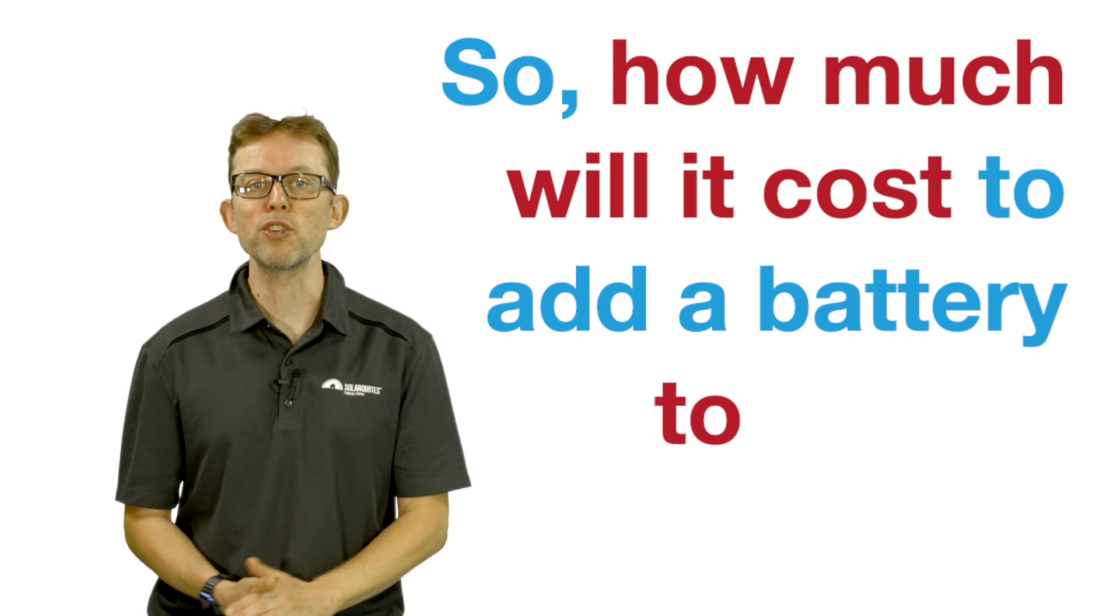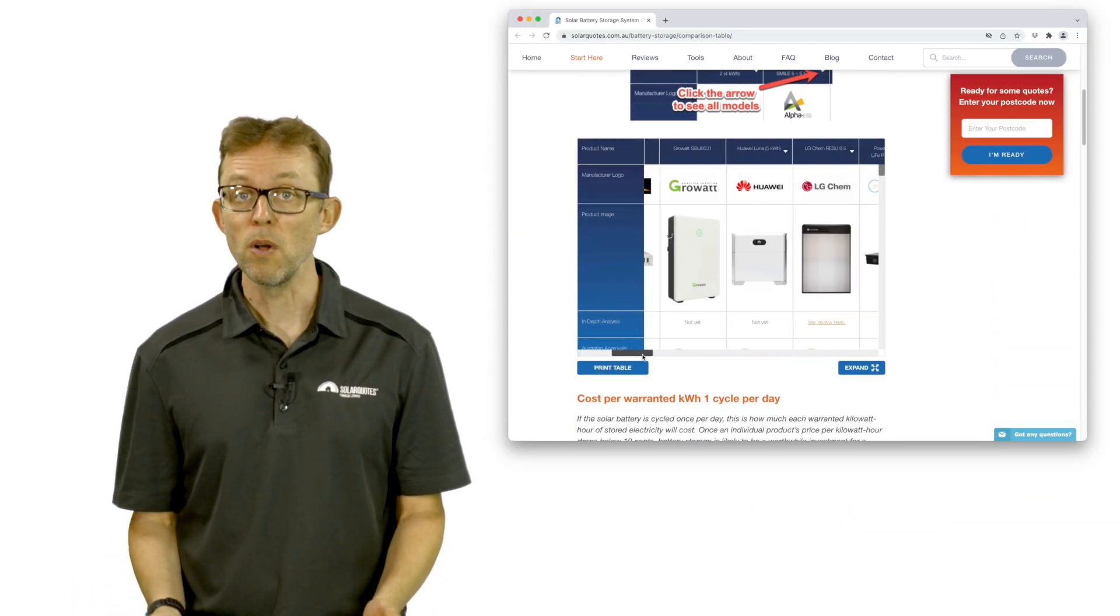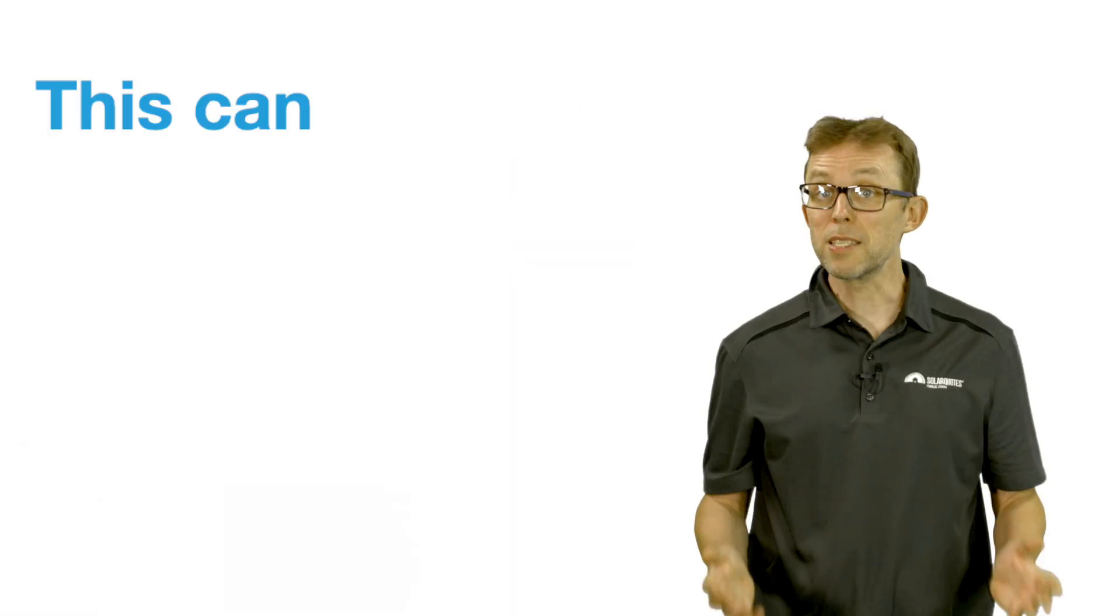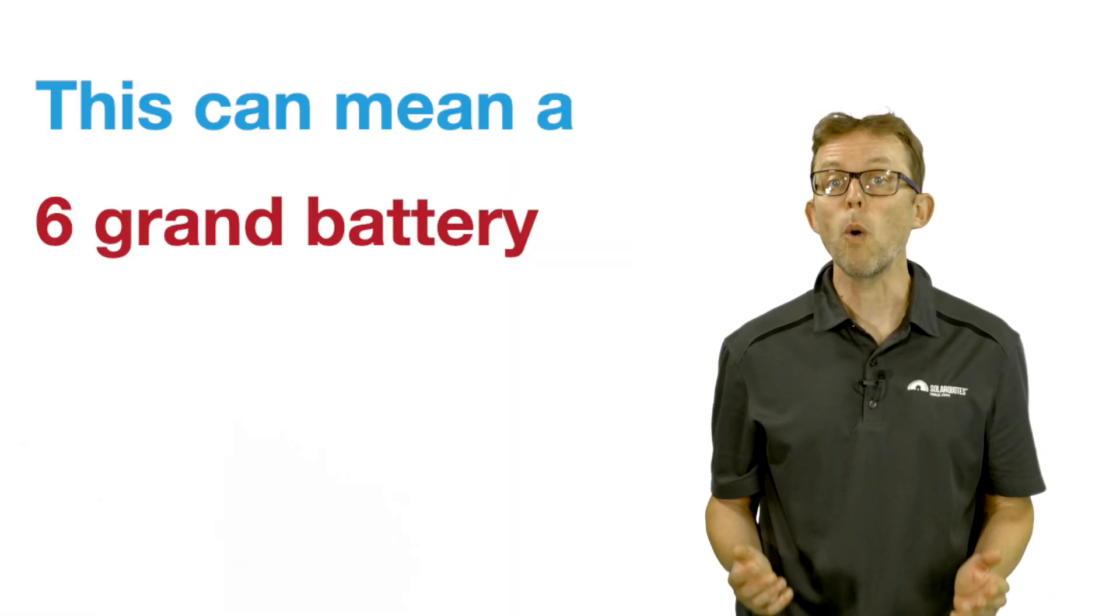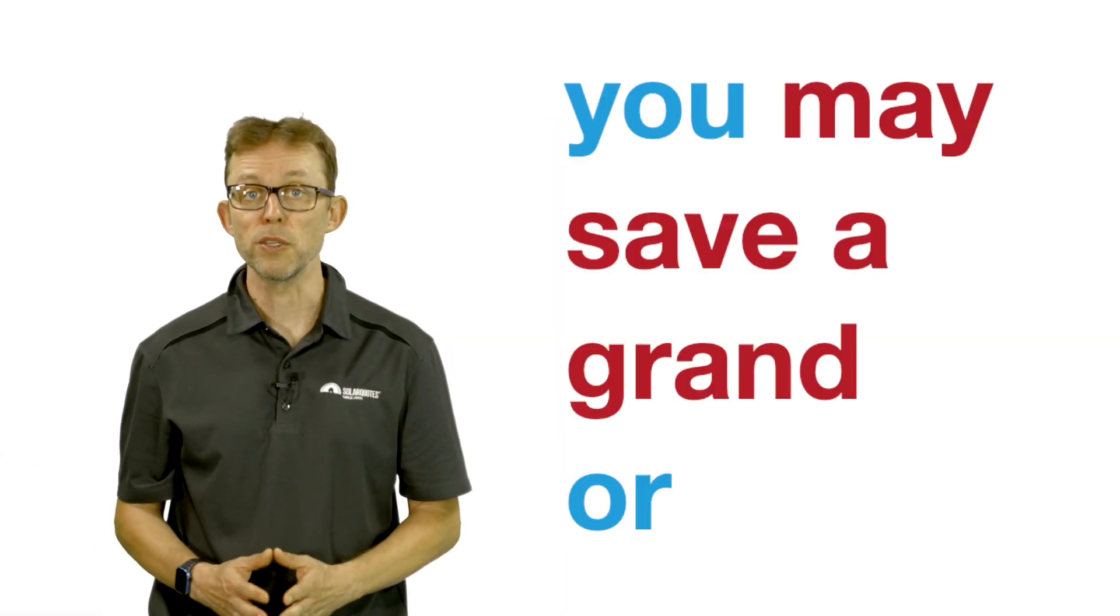So, how much will it cost to add a battery to a solar system? Well, my battery storage comparison table, linked in the description, lists the prices of various batteries. Importantly, listed prices do not include the cost of installation or the cost of extra electronics such as a battery inverter. This can mean a 6 grand battery winds up costing 10 grand installed. If you already have an existing solar system with a hybrid inverter that's compatible with the battery you want, you may save a grand or two.